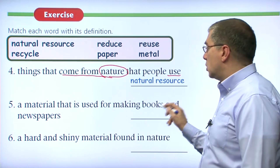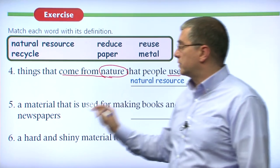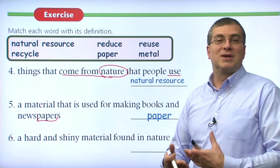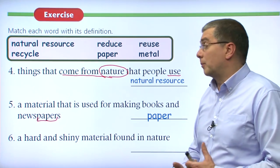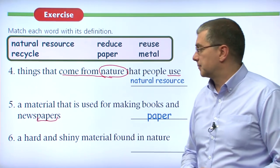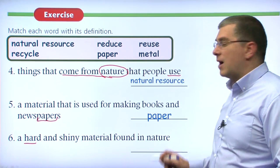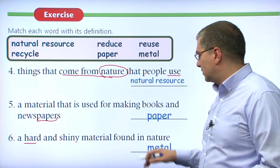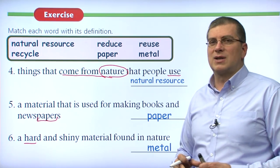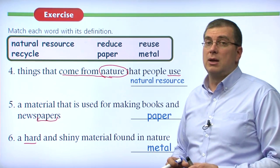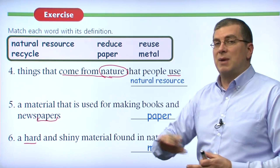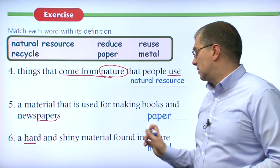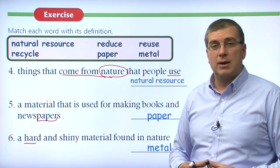Gold is a hard and shiny material we find in nature — that's metal. So is silver and copper and things like that. Gold is indeed metal, and though iron isn't always shiny, we can change iron and do certain things to make it shiny — turn it into steel, which is a hard and shiny metal. We get those ores from the ground. So these are our words and definitions.